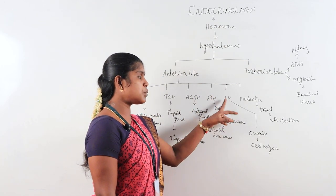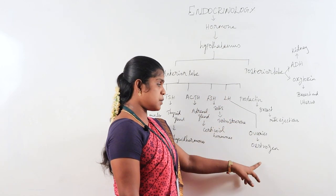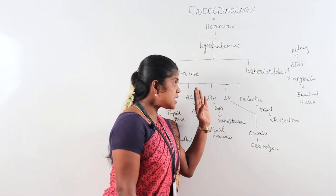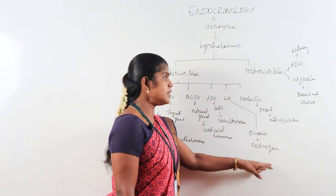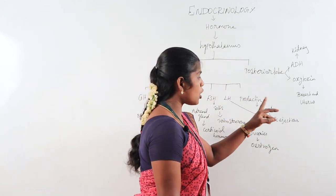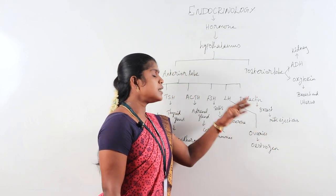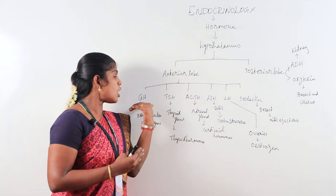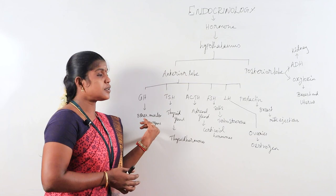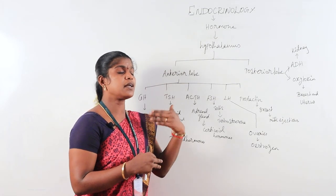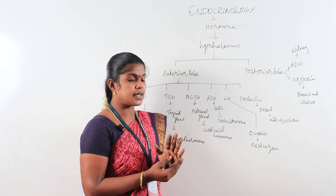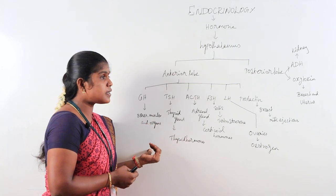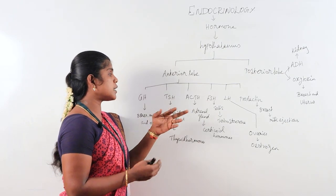LH is specifically involved in the menstrual cycle process. Prolactin is involved in milk ejection. Decreased growth hormone causes dwarfism, while increased hormone leads to gigantism. TSH increase causes goiter.